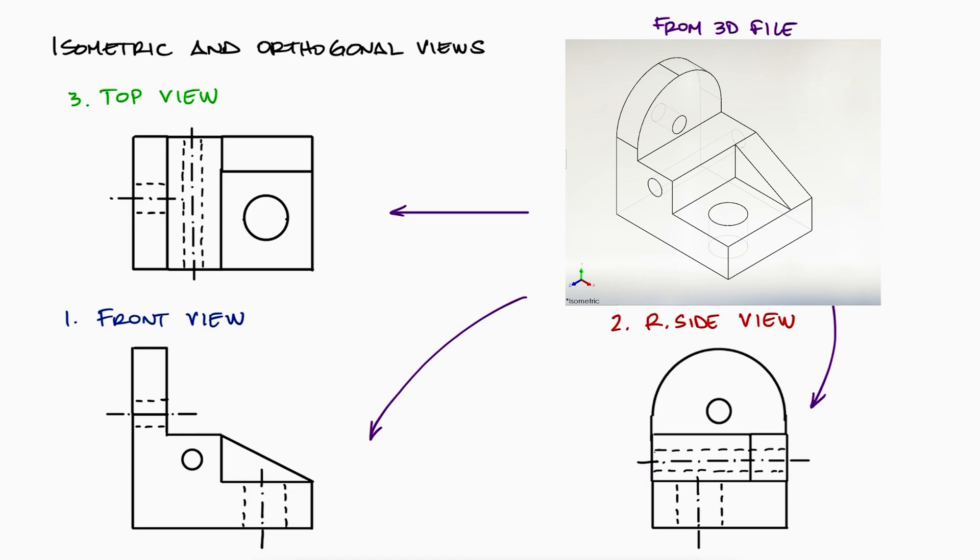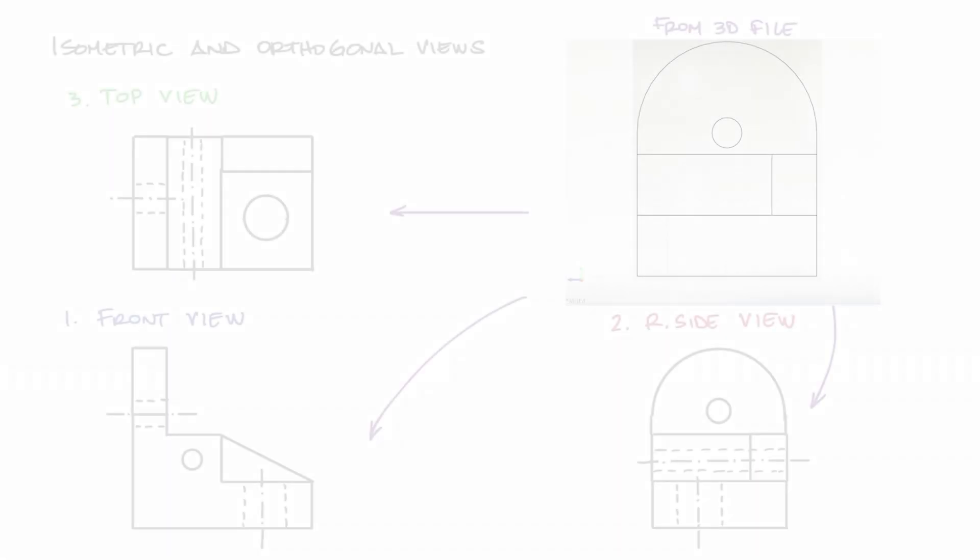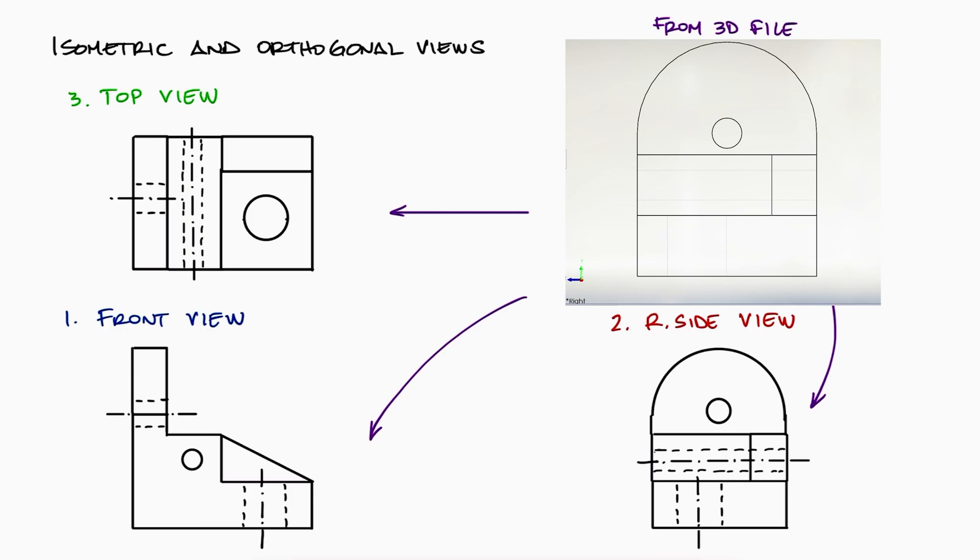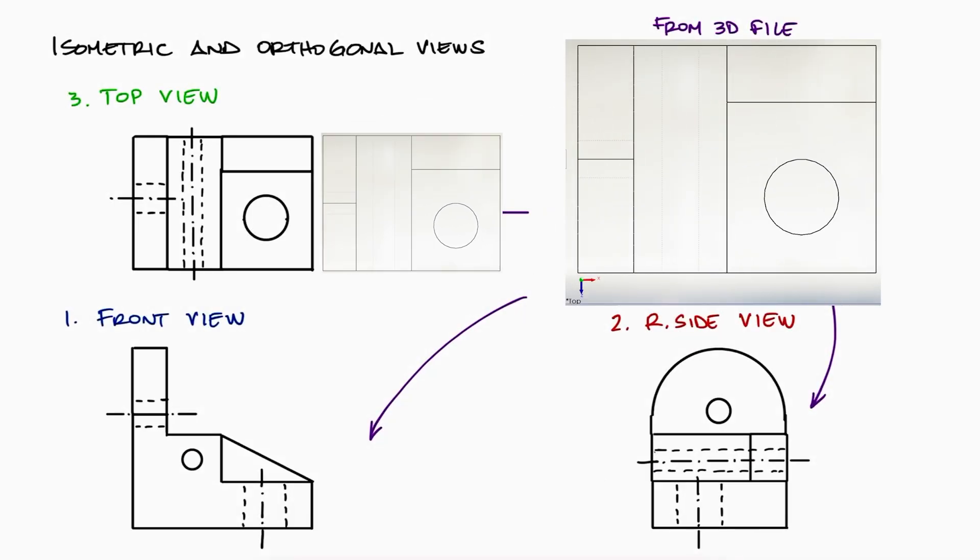For now, what we can do is look at this 3D render and rotate it to look at the front view and make sure that our sketch is indeed correct, and it is. Now, the side view, we compare it to our sketch, and it looks good. And finally, the top view, and compare it once again.